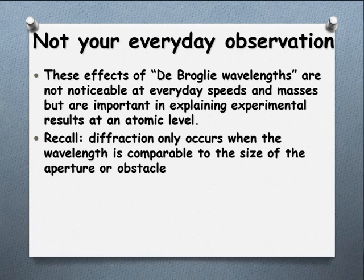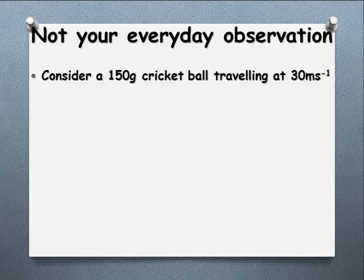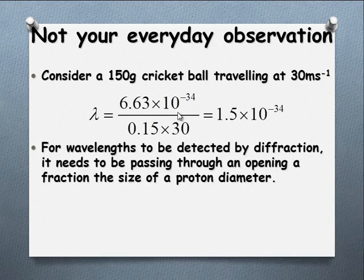Let's look at it in terms of an everyday scenario. We have a cricket ball — it's 150 grams, traveling at 30 meters per second. Let's have a look at the wavelength that would produce. Substituting in, we've got H over MV, putting that into kilograms of course. And we get a wavelength of 1.5 times 10 to the negative 34.